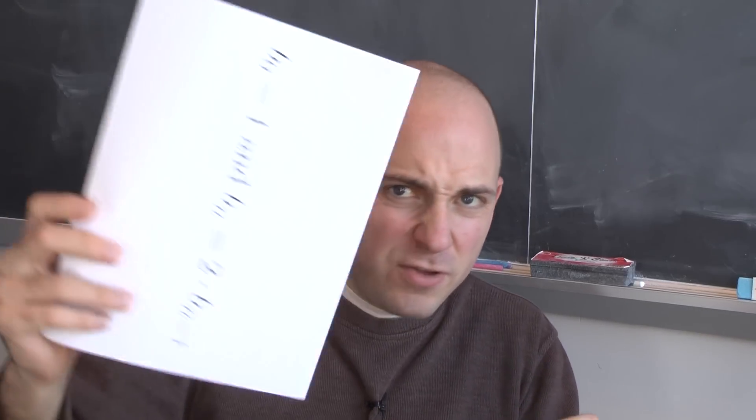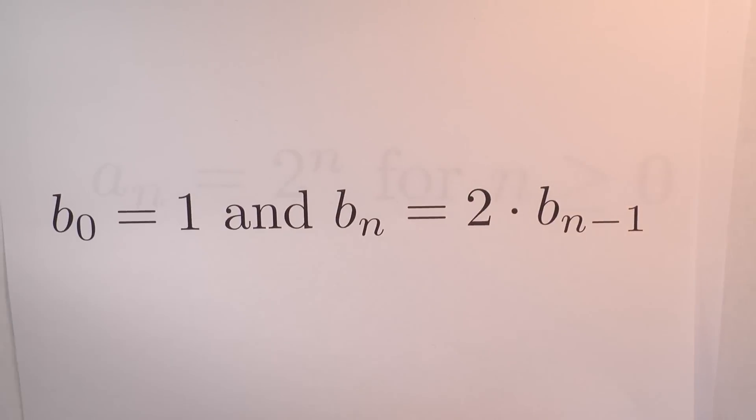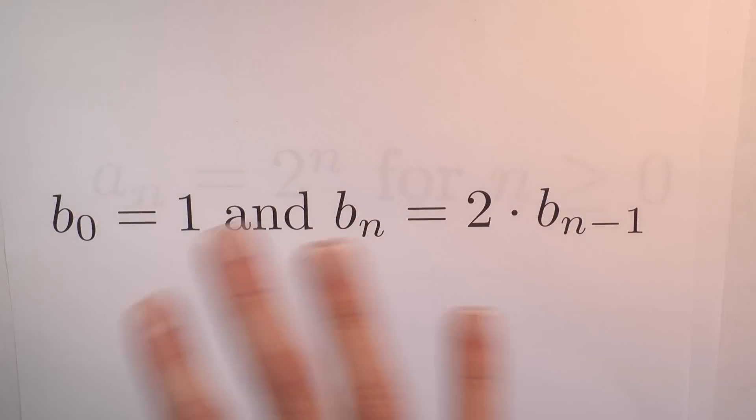And here's another sequence, B sub n. The sequence B sub n, whose zeroth term is defined to be 1, and subsequent terms will be calculated by referring back to previous terms, so that the nth term is twice the preceding term.